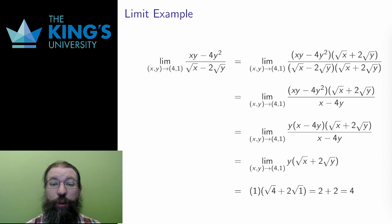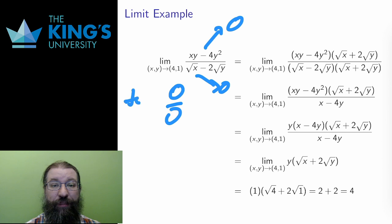Here's a more complicated example, but one that uses a technique that I taught in single variable calculus: multiplication by a conjugate. This is a limit of type 0/0, since if you evaluate both the numerator and denominator at the point you're approaching, you would get 0.